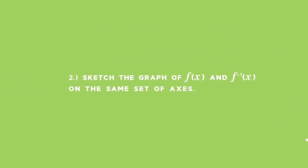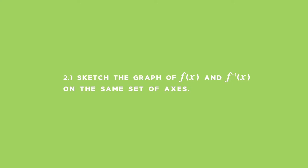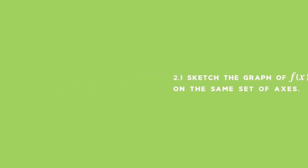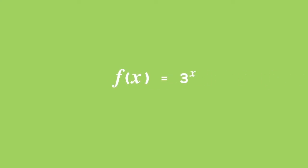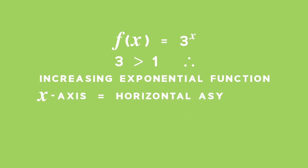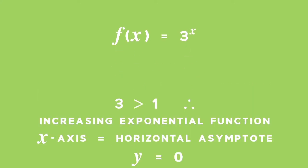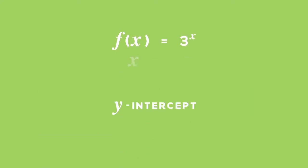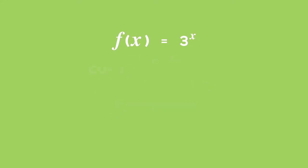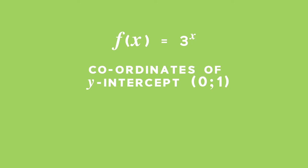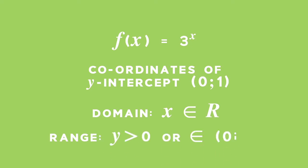For part 2, we must draw the graphs of both exponential and logarithmic functions on the same set of axes. We start with the graph of the exponential function. We are dealing with an increasing exponential function with a horizontal asymptote of y equals 0, meaning the x-axis is the horizontal asymptote. To sketch the graph f of x, find the y-intercept by substituting x with 0. You get 3 to the power of 0, which equals 1. So the coordinates of the y-intercept are (0, 1). The domain of f of x is the set of all real numbers and the range is all values of y greater than 0.